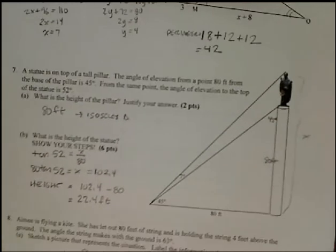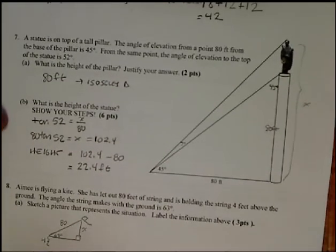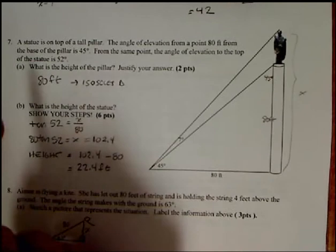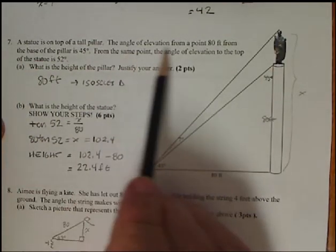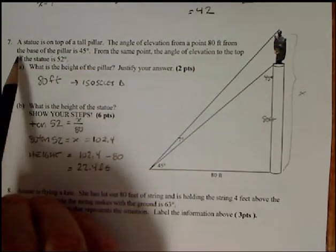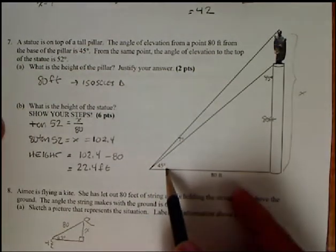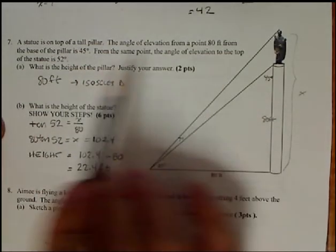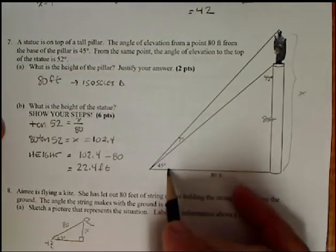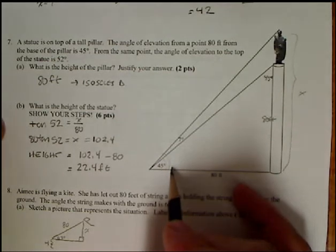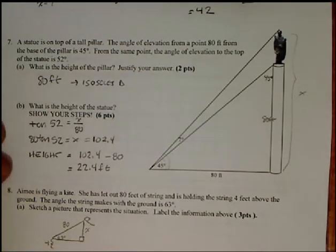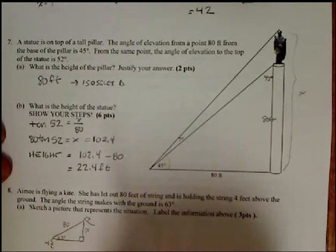This is a trig example. So we're going to be using Sokotoa. Now be careful with this kind of a problem. Statue is the top of a tall pillar. That's the statue. Angle elevation from 0.80 feet from the base is 45 degrees. So this is 45 degrees. The angle of elevation from the same spot to top statue is 52 degrees. So when I put these two together, it adds up to 52. That's just labeled as 7 degrees. But I'm not ever going to use the 7 degrees except for to say that I'm going to use it with the 52.